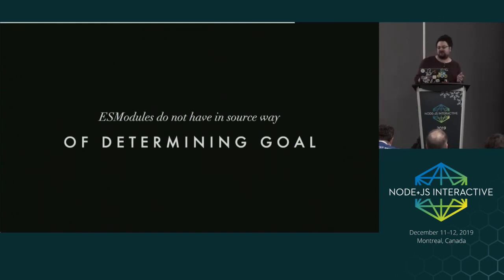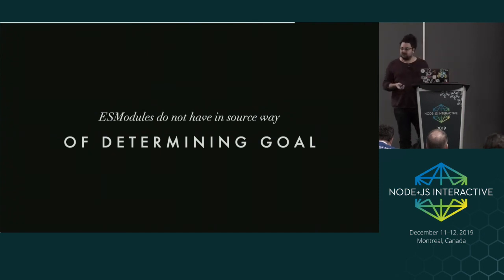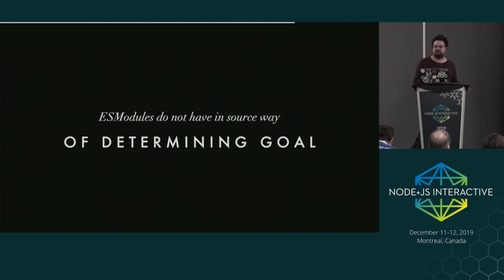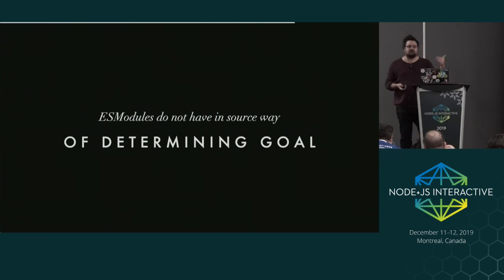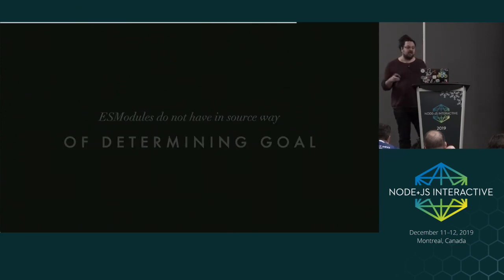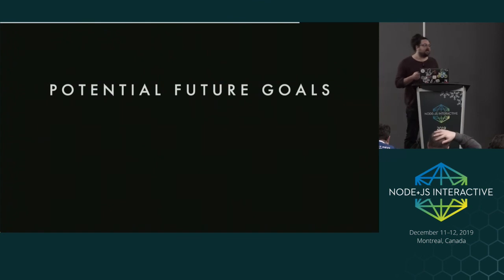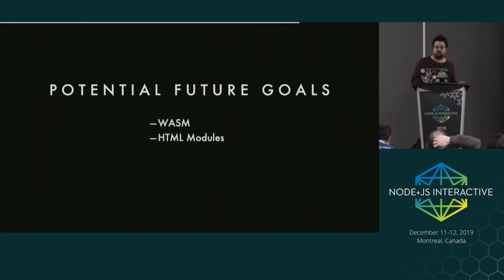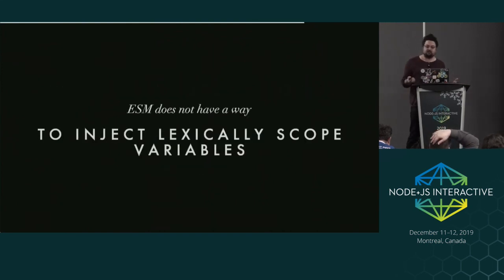What gets really strange is that ES modules don't have an in-source way of determining the goal. There's a pragma to switch between strict and sloppy mode, but there is no in-source way of doing it for modules. In the browser, if you're loading a module you say 'type=module' in the script tag, and the script tag knows to send it to the right parser. There is no pragma. For Node, that became a challenge - how do we know the difference? On top of this, there are other potential future goals: WebAssembly, HTML modules, web package, binary AST - all potential goals that could be imported in the future.